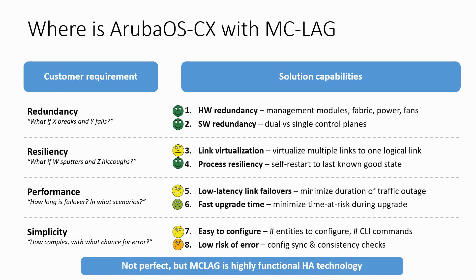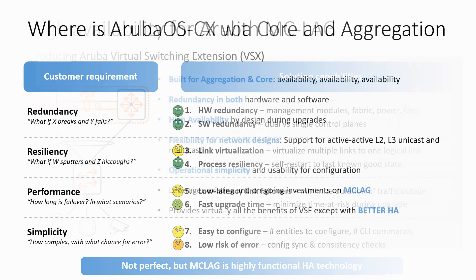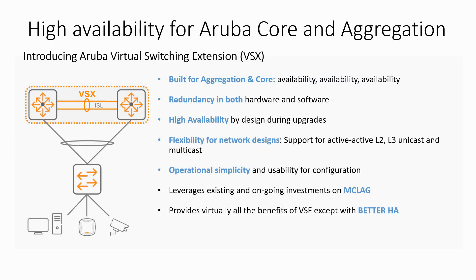And here is where virtual switching extension comes in. VSX is built for the core and aggregation where availability is key, and the foundation of VSX is MCLag. VSX allows for high availability during upgrades and operational simplicity by introducing a single management plane, distributed layer 2 and layer 3 forwarding without requirement for VRRP. It provides all the benefits of stacking like virtual stacking framework (VSF), but with better high availability because it utilizes dual control planes.